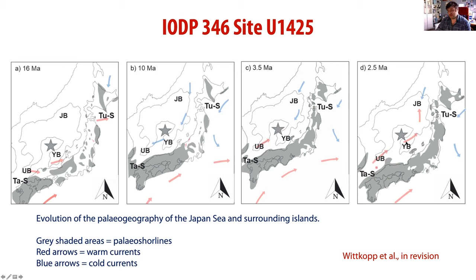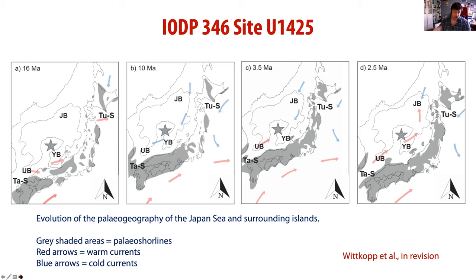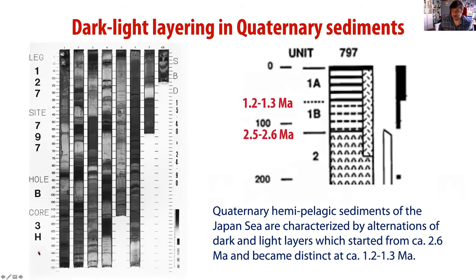Even though we have this connection by ~2.5 Ma, the overall temperature is much cooler than in the mid-Miocene due to global temperature changes. What we're seeing is evidence of global temperature changes reflected in sea surface temperatures, but complicated by changes in the basin itself — neotectonics is playing its role. This establishes what we understand to be modern Japan Sea oceanography around 2.5 Ma, which segues nicely into looking at Quaternary sediments at a different site: U1427.